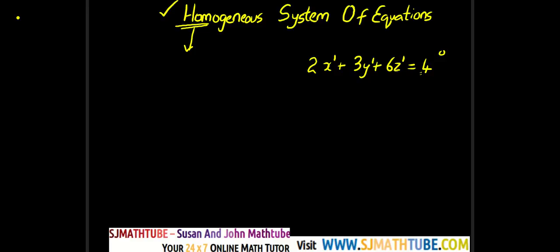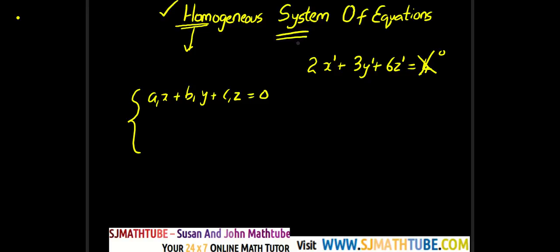So if you want this equation to be homogeneous, then the only way is to remove the constant. So we will be dealing with a system in the form a1x plus b1y plus c1z is equal to 0. This is a homogeneous equation, and we are interested in a system — not in one equation, but a system of equations. So we will have a2x plus b2y plus c2z is equal to 0, another homogeneous equation, and so on.